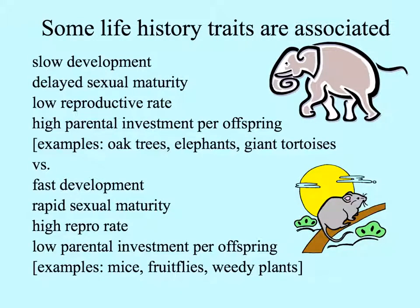In this bird species we can see that the greatest number of clutches have eight or nine eggs per nest, but nests with twelve or more eggs show the largest percentage of surviving young. Looking at all organisms, we can make some generalizations: organisms that develop slowly take a long time to reach sexual maturity and have a low reproductive rate, investing heavily in their offspring — examples include oak trees with their relatively big seeds, elephants with long gestation and offspring spending several years with their mothers, and giant tortoises. Versus organisms that develop quickly, reach sexual maturity very early, have a very high reproductive rate, and don't invest much in their offspring — examples include mice, fruit flies, and weedy plants.